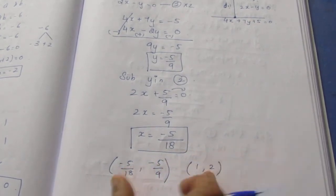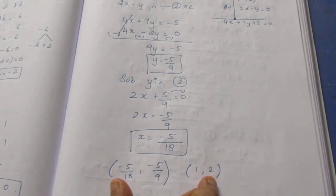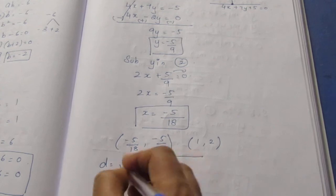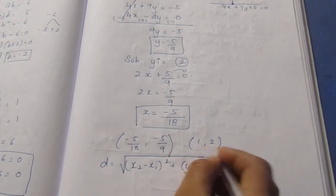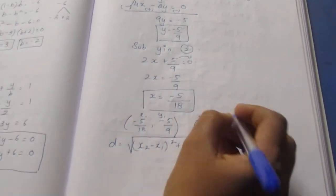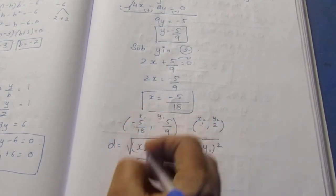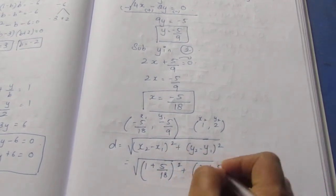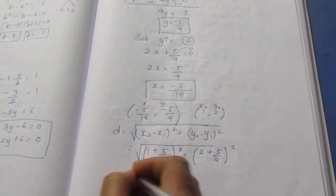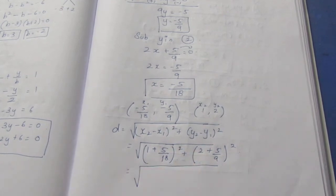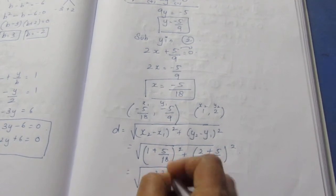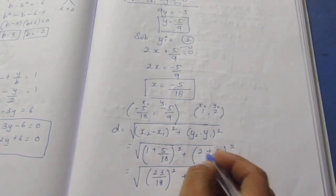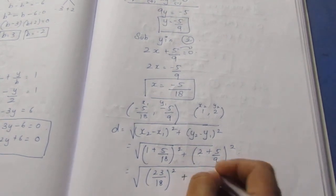We want the distance of this two line segment. So taking the points, we know the coordinates of the line segments. So we can directly use the distance formula which is root of (x2 minus x1) whole square plus (y2 minus y1) whole square. Now this will be x1 y1 and x2 y2 equals root of (1 minus of minus will become plus 5 by 18) whole square plus (2 plus 5 by 9) whole square. Taking LCM here 18, 23 by 18 whole square plus 9, 2s are 18, same 23 by 9 whole square.